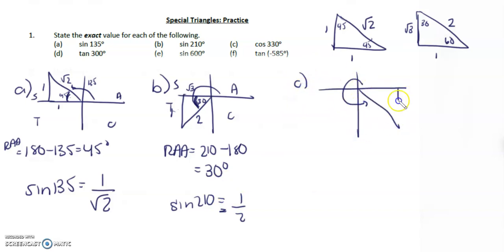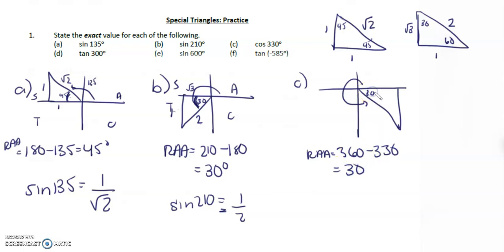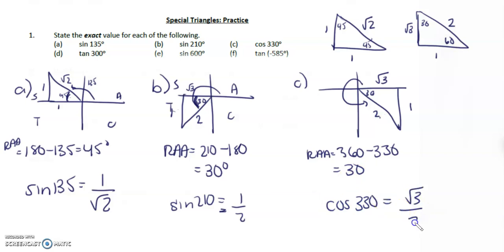Cos of 330 is in the fourth quadrant. The related acute angle is 360 minus 330, giving us 30 degrees. Opposite 30 is 1, adjacent 30 is root 3, and hypotenuse is 2. Cosine is adjacent over hypotenuse, so cos of 330 equals root 3 over 2. That's positive because we're in the C quadrant.